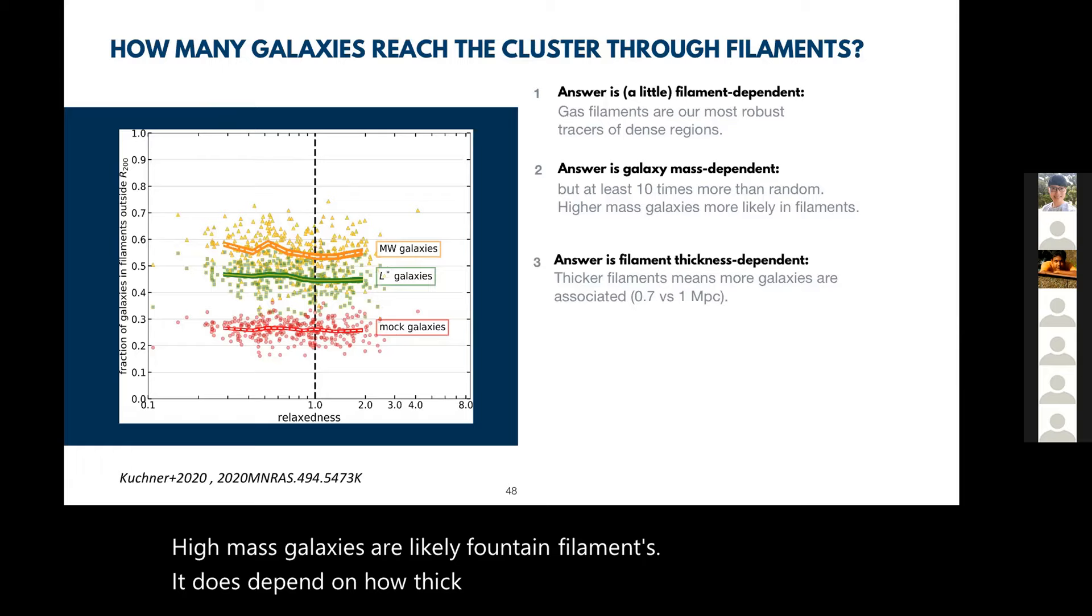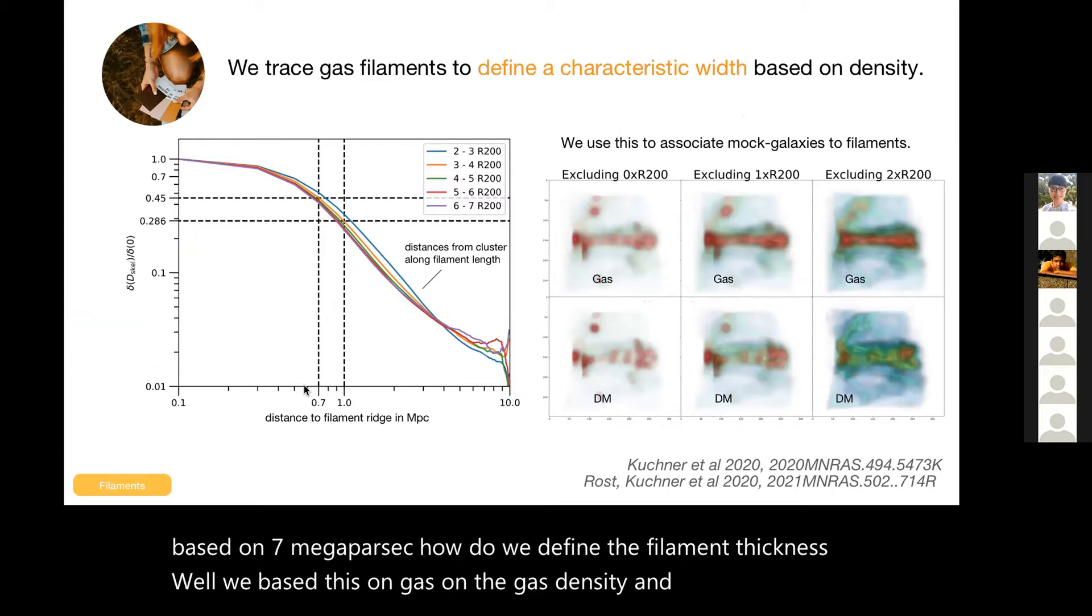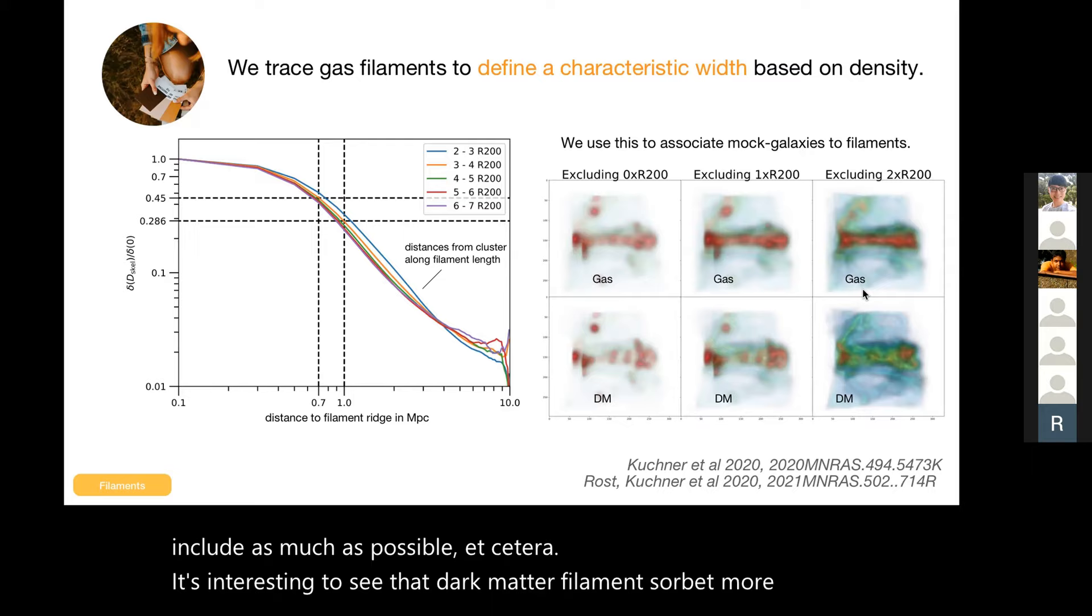High mass galaxies are likely found in filaments. It does depend on how thick your filament is. Obviously if you have a narrower filament, then fewer galaxies will make it. This is based on 0.7 megaparsec. How do we define the filament thickness? Well, we base this on gas density and this drop-off, and we define it at 1 megaparsec or if you're a bit more rigorous at 0.7 megaparsec. This again depends on if you're interested in a pure sample or include as much as possible. It's interesting to see that dark matter filaments are a bit more fluffy than gas filaments, and we looked at this in a paper led by Augustin Rost.